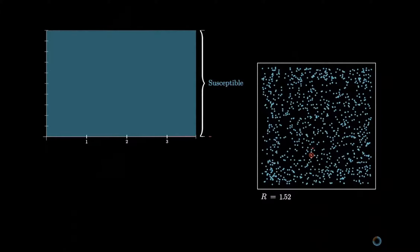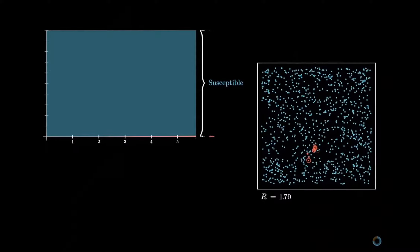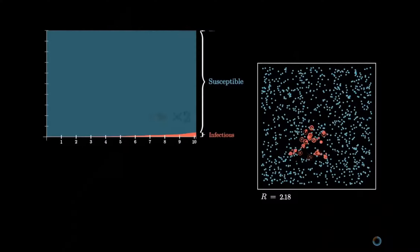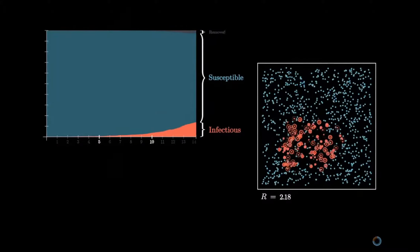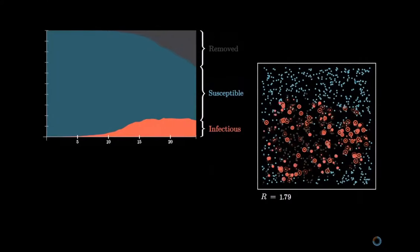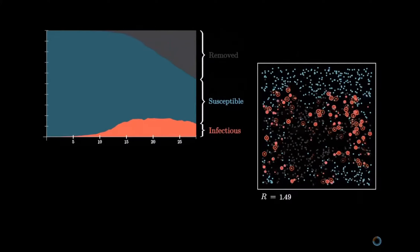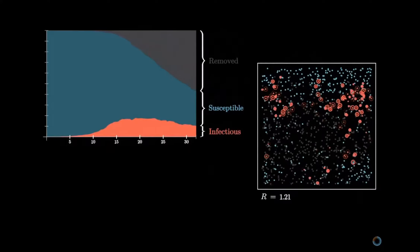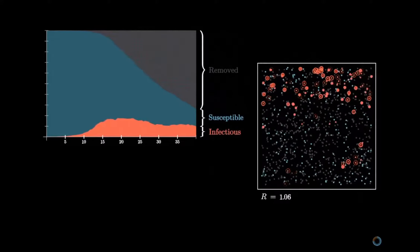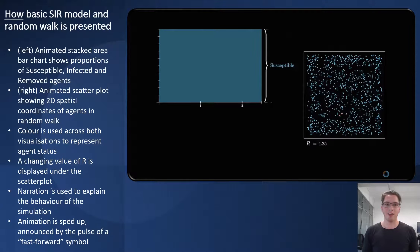In these first few runs that you're looking at, everybody is simply meandering around the city in a kind of random walk, and the infection follows the rules that we've laid out. So it doesn't look great — after not too long, almost everybody gets infected. On the left we have an animated stacked area bar chart which shows the proportions of susceptible, infected, and removed agents.